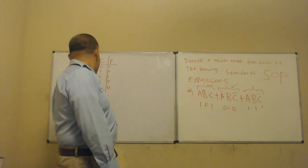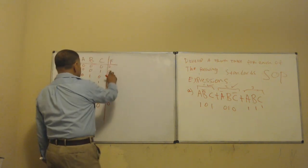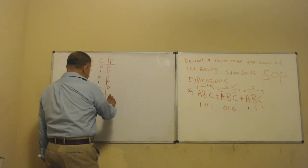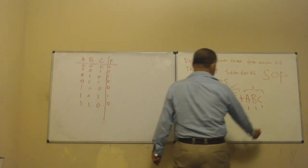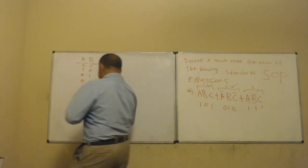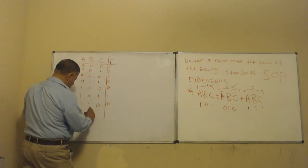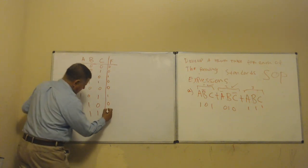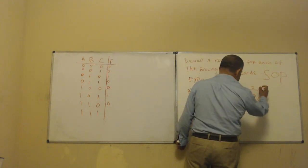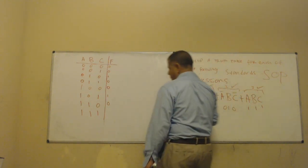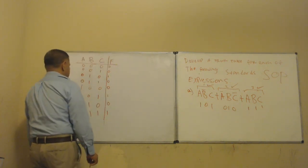Now we create the last row — the eighth row: one, one, one. That automatically equals one because this term A·B·C is exactly that combination. So the output is one.